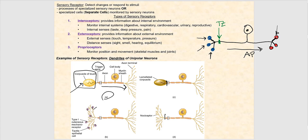Let's look at another example: figure C. This is a unipolar sensory afferent neuron with the trigger zone over here. The laminated corpuscle — all of this — is a dendrite of this sensory neuron. Laminated corpuscles, also known as Pacinian corpuscles, respond to deep pressure. When pressure is applied, they generate a graded potential that travels to the trigger zone, producing an action potential that travels toward the synaptic knob.